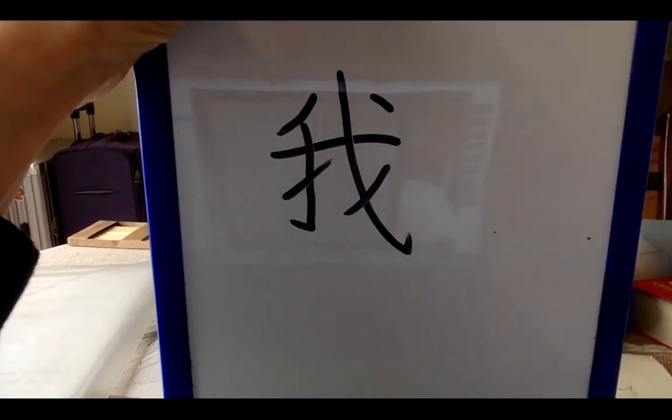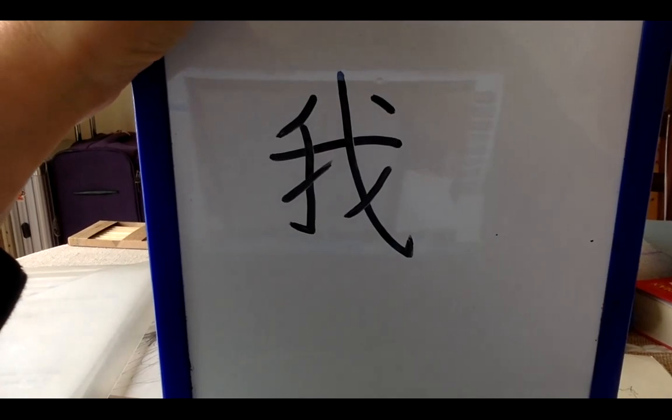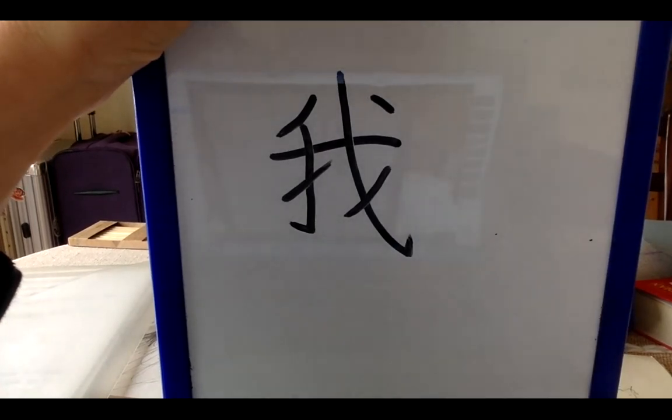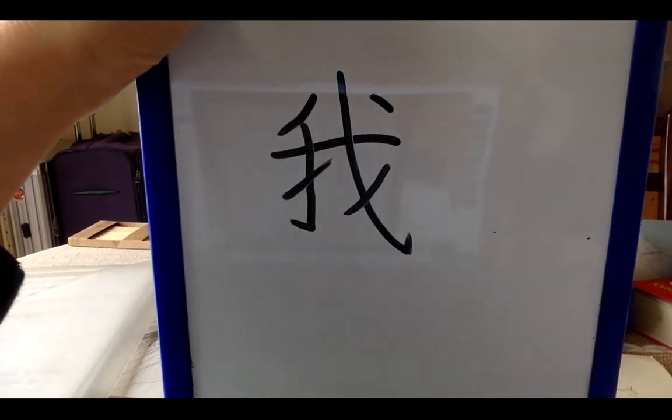seven. There are seven strokes in the character 我, and you must follow each stroke in the correct order. Okay, let's try to write it again.